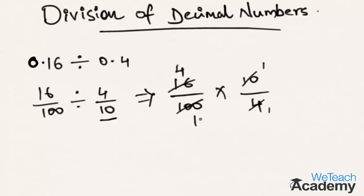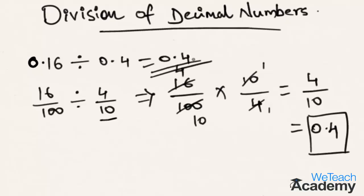Then 10 one times is 10, and 10 ten times is 100. After simplification, the product of numerators is 4 times 1, which is 4. 10 one's are 10. 4 by 10. Hence, 4 by 10 is nothing but 0.4. Therefore, the result of 0.16 divided by 0.4 is 0.4.